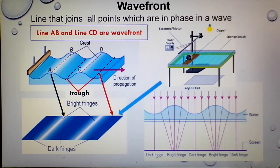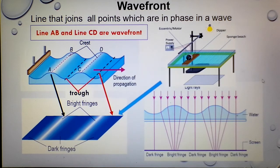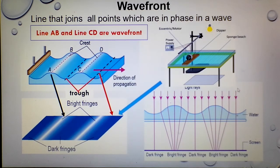You can see the formation of bright and dark fringes alternately on the screen of the ripple tank. You must be able to explain how the pattern is formed using this diagram — draw it to explain the formation of bright and dark fringes.